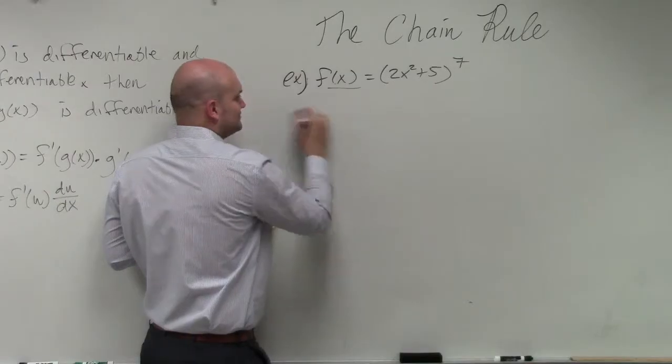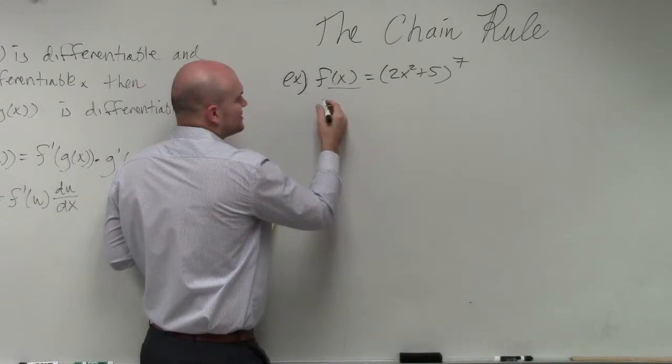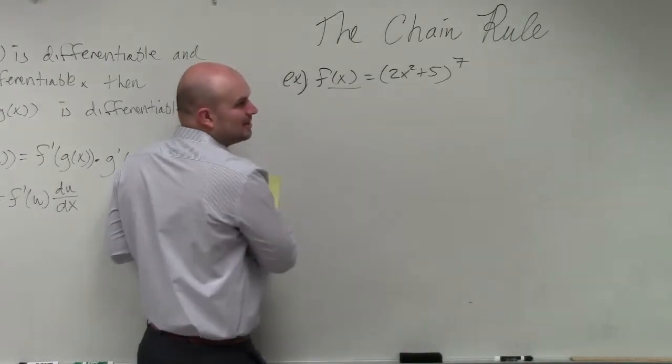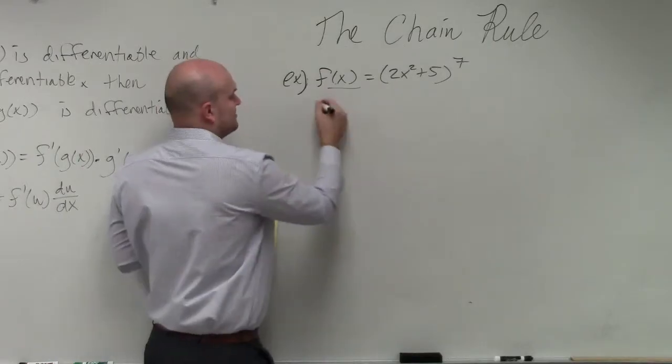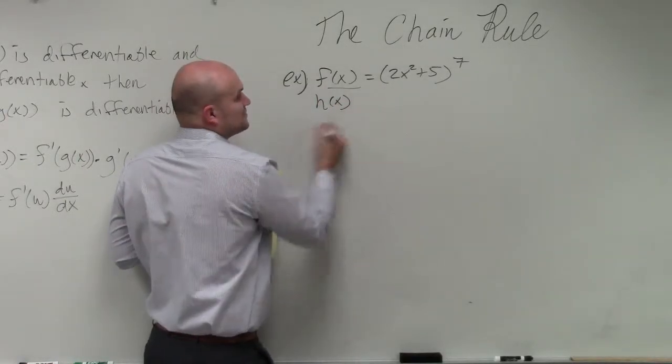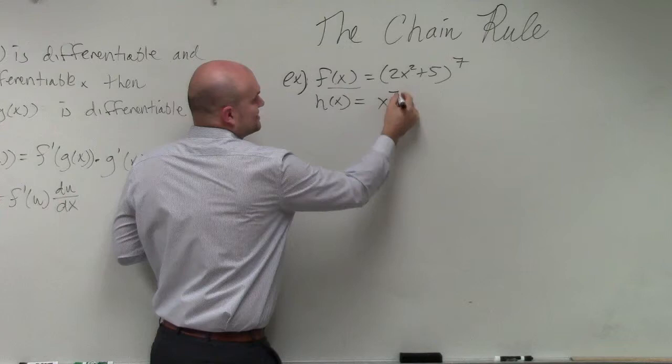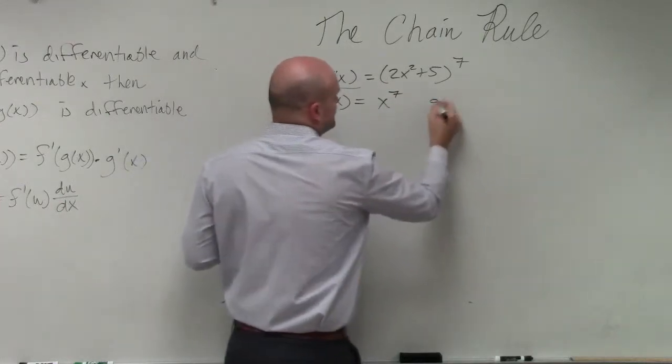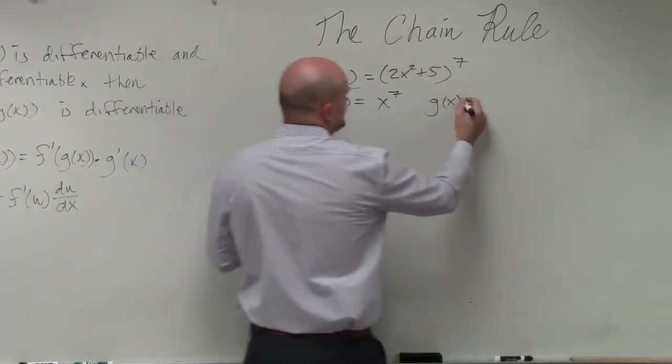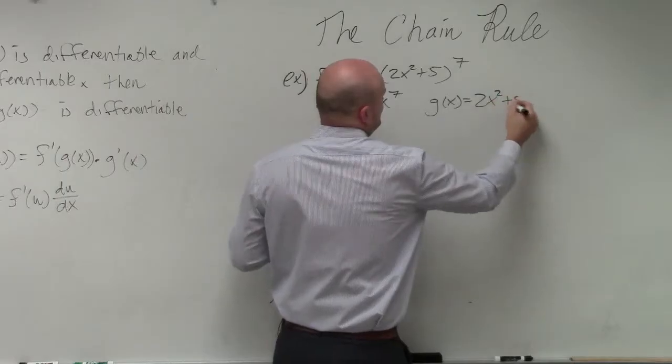But again, I'm just going to look at, actually, I'm going to change this. I'll call f of x h of x for this example. So I'll call h of x, which is going to be the outside function, x to the seventh. And g of x will be my new inside function, which is 2x squared plus 5.